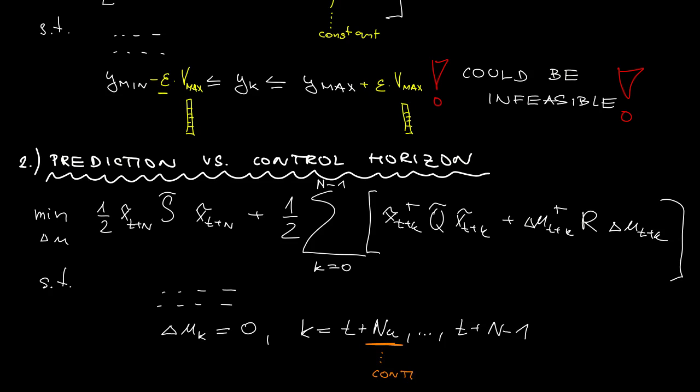Now, N sub U is called control horizon and N is the prediction horizon. Obviously, N sub U should be smaller.